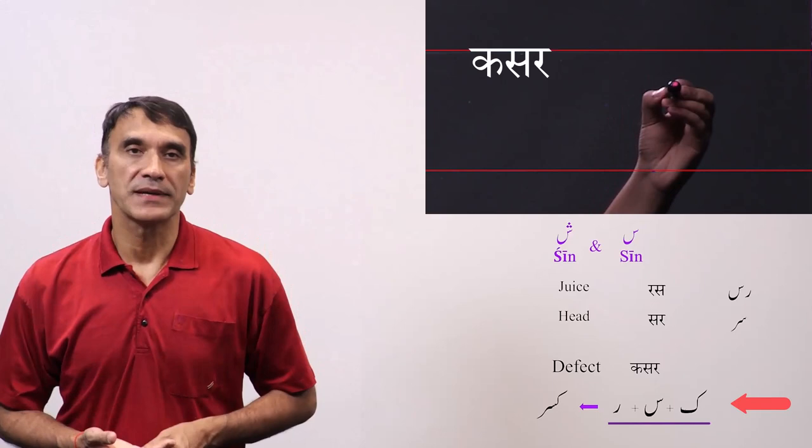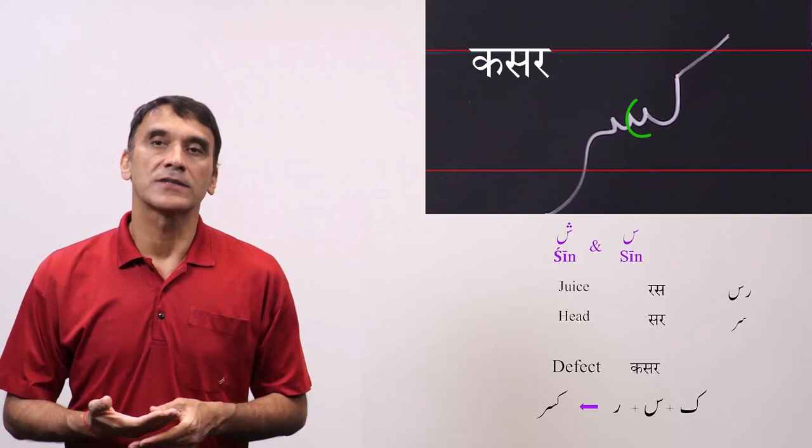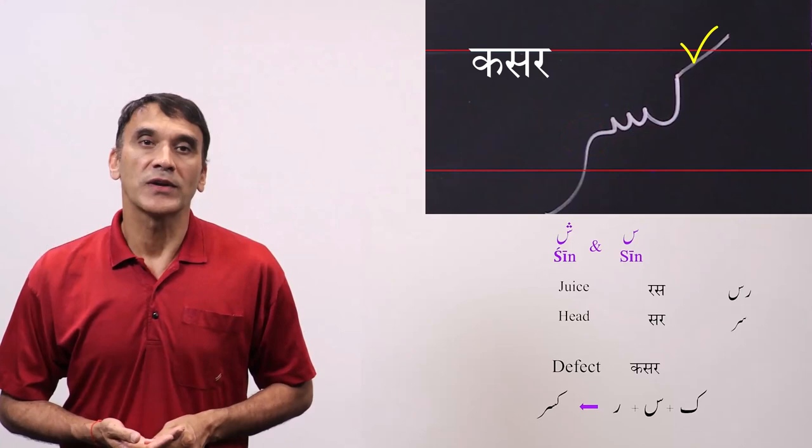The next word is kasar, that means defect. The spelling is calf plus seen plus re. Here seen comes as the medial letter. It is connected to the letter calf, the ker sound before, and to the letter re after.